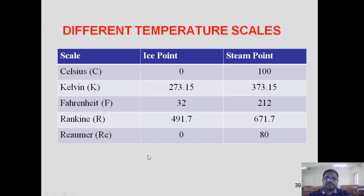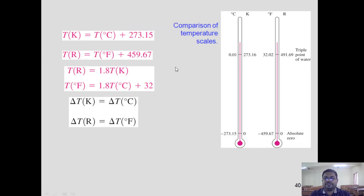This table represents the ice point and steam point for five different scales: Celsius, Kelvin, Fahrenheit, Rankine, and Rumor. In the SI system we use only Celsius and Kelvin; for the British or English system we use Fahrenheit, Rankine, and Rumor. The corresponding ice points and steam points are given. Using the interrelationship between ice point and steam point, we can find the relationship between these five scales.